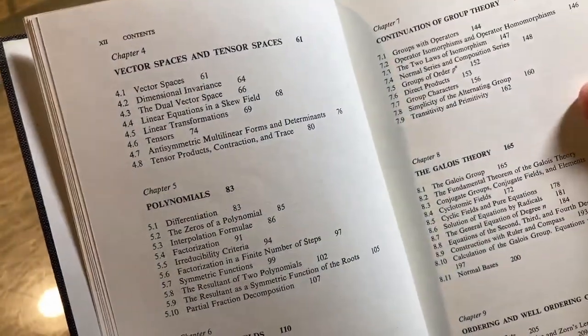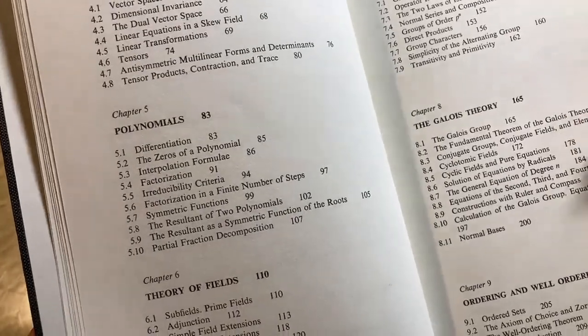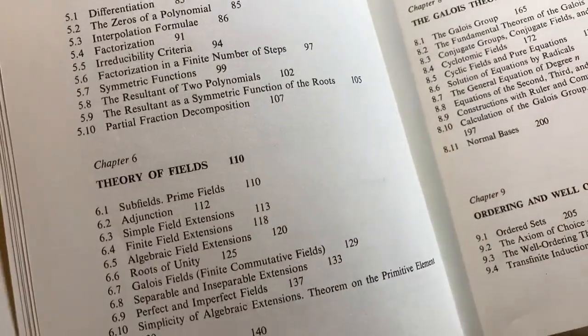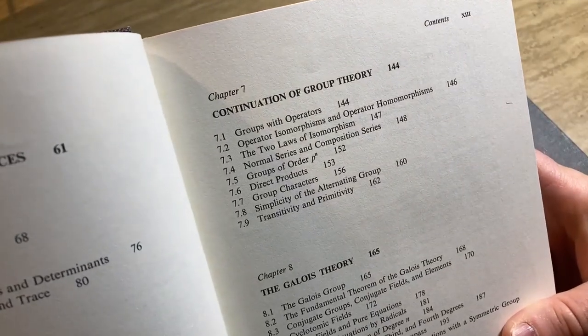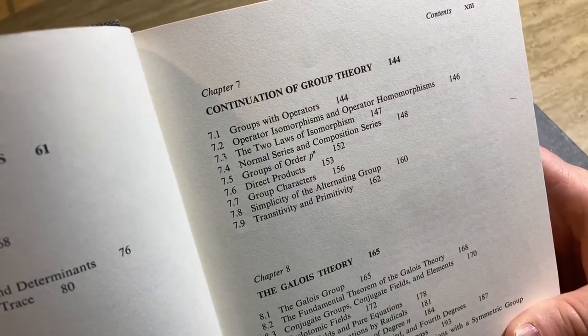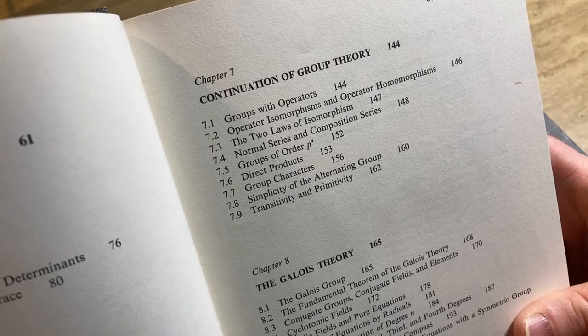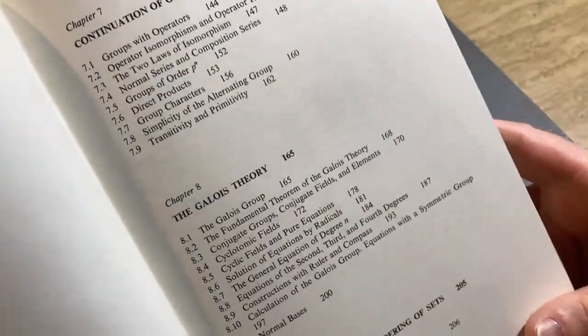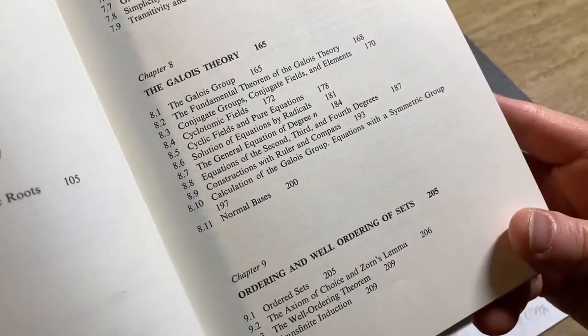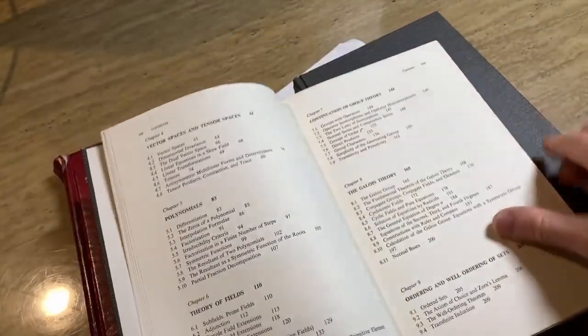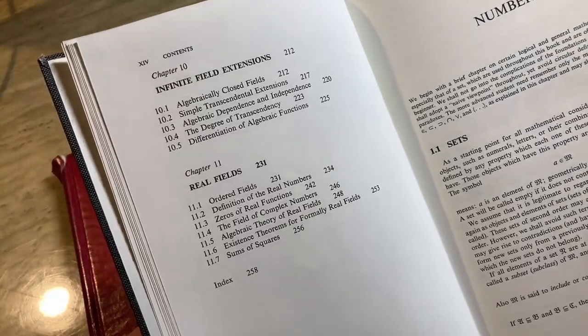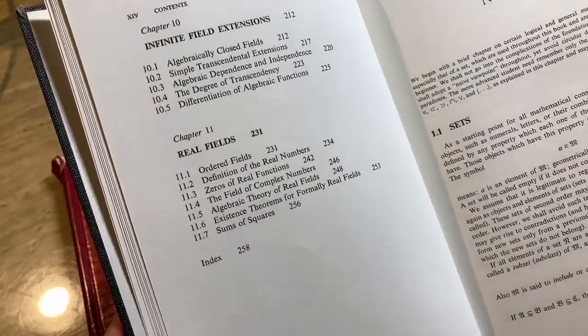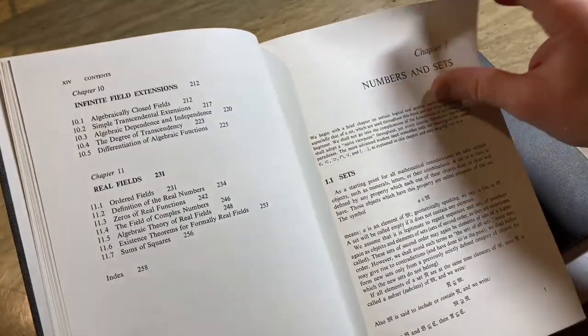Vector spaces and tensor spaces. Polynomials. That should do fields next. It does. Theory of fields. Continuation of group theory. So it's got some other stuff here: groups with operators, direct products, groups of order p to the n. The Galois theory. Ordering and well-ordering of sets. Lots of good mathematics in a book like this. And then infinite field extensions and real fields. Let's just pan through it and see what we can see in this book.